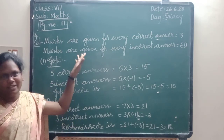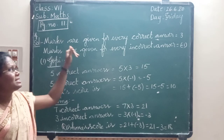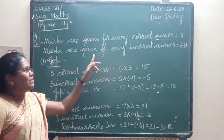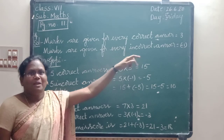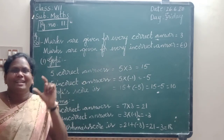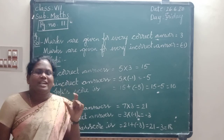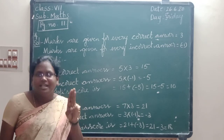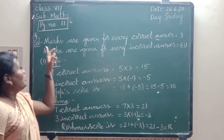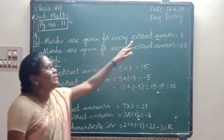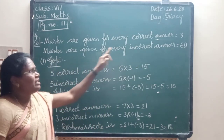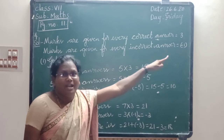Here, what is given in the question? Marks are given for every correct answer: 3 marks. Marks are given for every incorrect answer: minus 1 mark. One test contains 10 questions. Every correct answer gives 3 marks and every incorrect answer gives minus 1 mark.